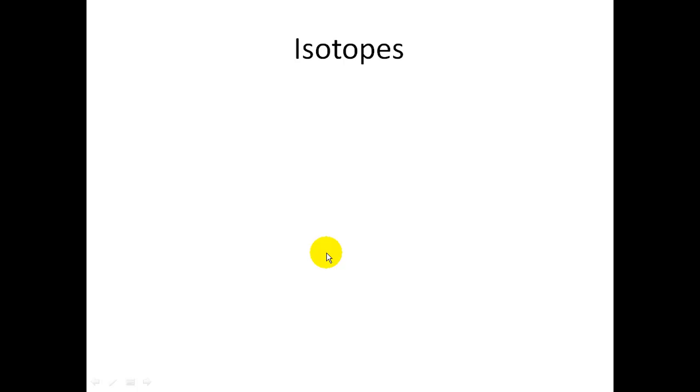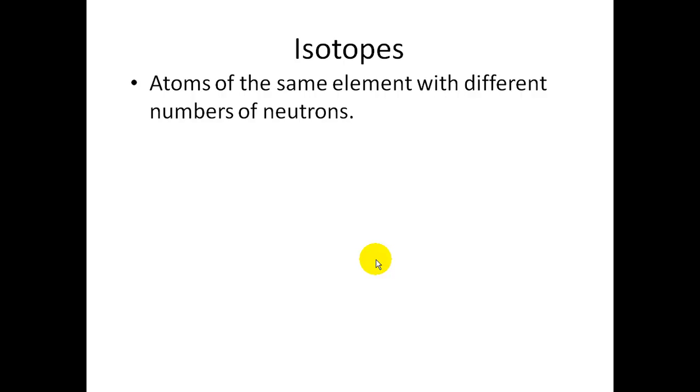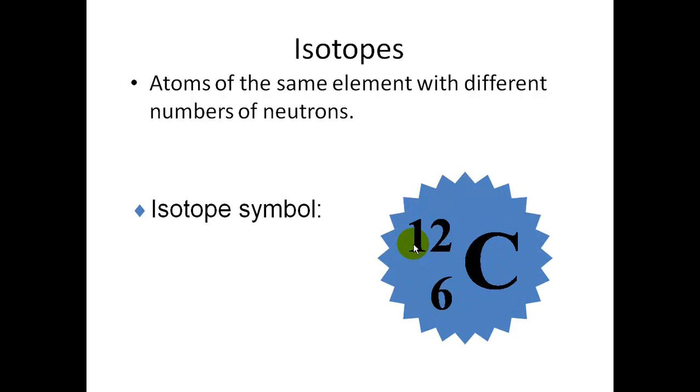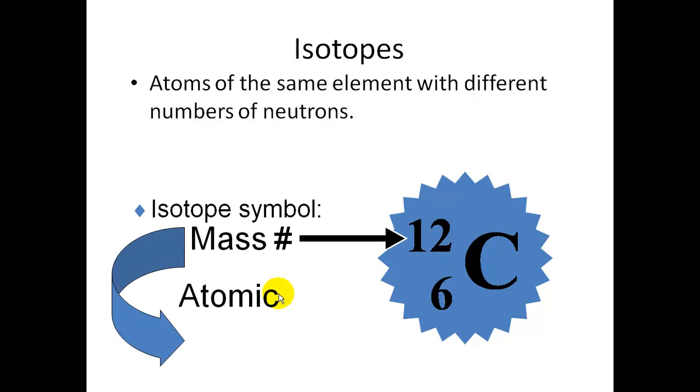The other topic we're going to talk about in this section for the part B is isotopes. And isotopes are atoms that are the same element, but they have a different number of neutrons. So, as long as the proton number is the same, it's still carbon, but if it has a different number of neutrons, it is an isotope. For example, this is carbon-12. The mass number—we say carbon-12, that's how we would read that. The mass number is on the top, and the bottom refers to the atomic number, which also gives us the number of protons.